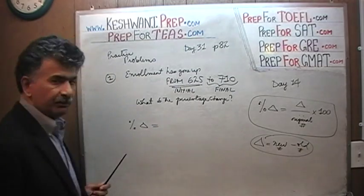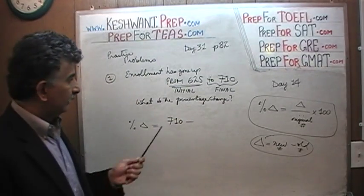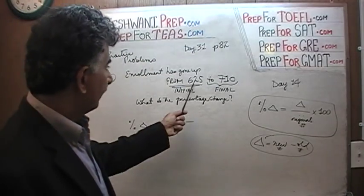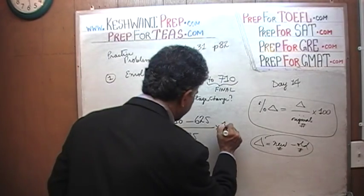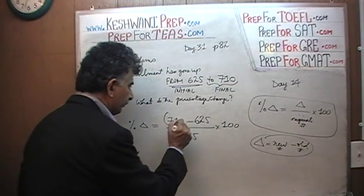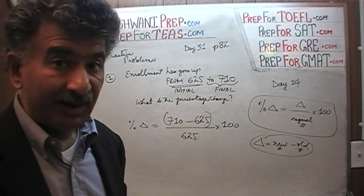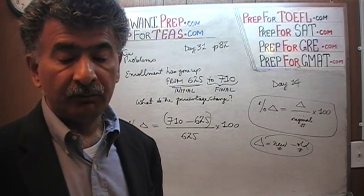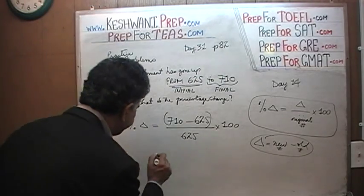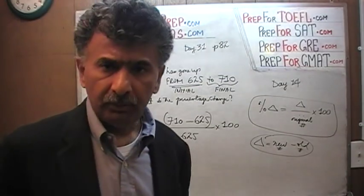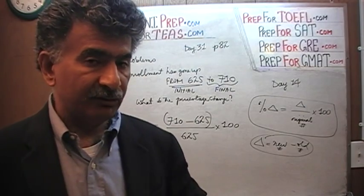So percentage change is what they're asking, and it's going to be our ending number — the new number, which is 710 — minus 625, divided by the original number which is 625, times 100. From this point on, it's just simple arithmetic. How much is 710 minus 625? Well, 700 minus 625 is 75, therefore 710 minus 625 must be 85. So we have 85 over 625, times 100.